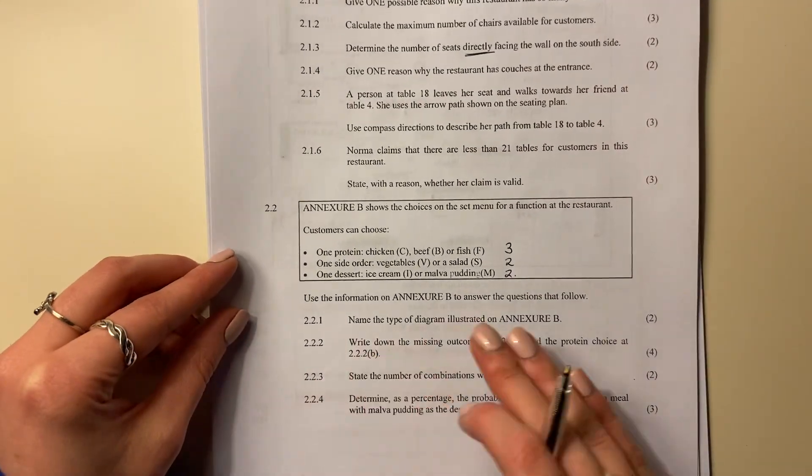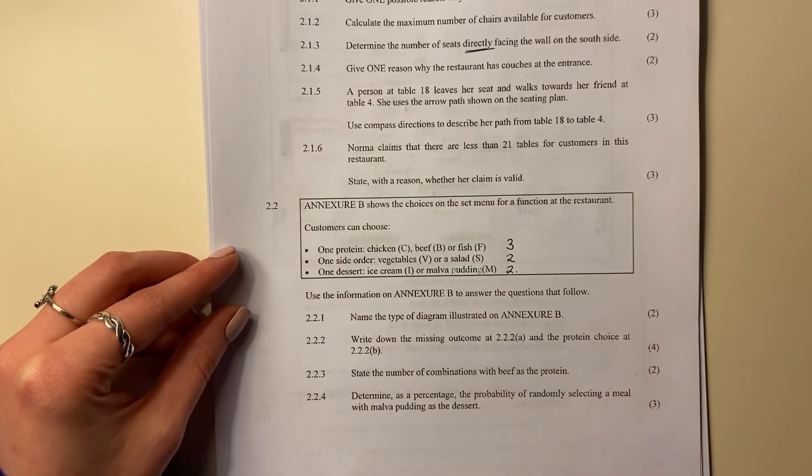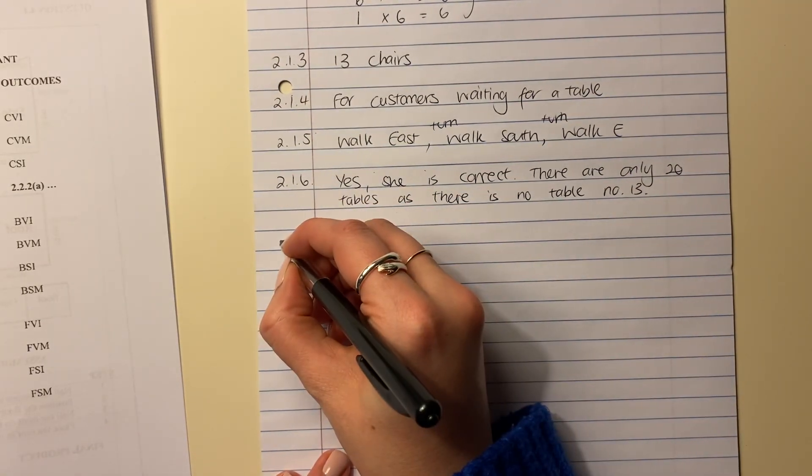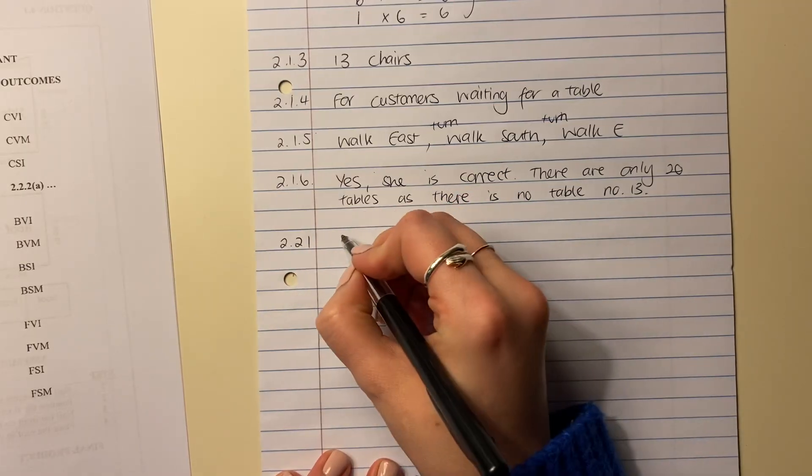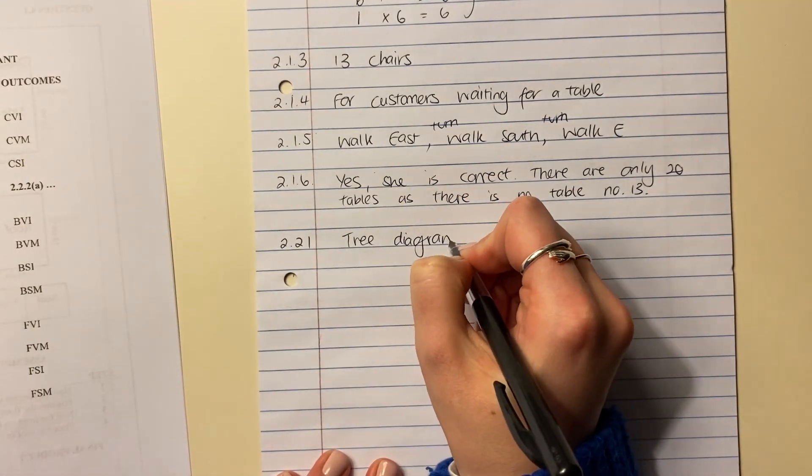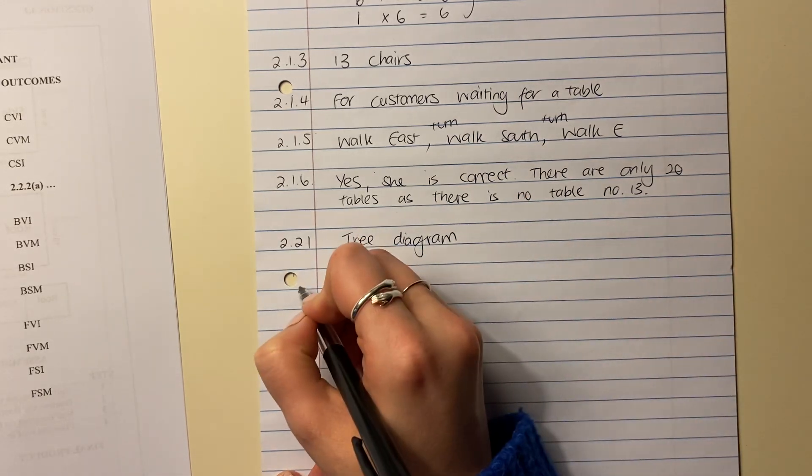It says, name the type of diagram illustrated on Annex Tip B. Well, you should know by now that this is called a tree diagram. So 2.2.1, we call this a tree diagram. And that's a pretty easy one to do.